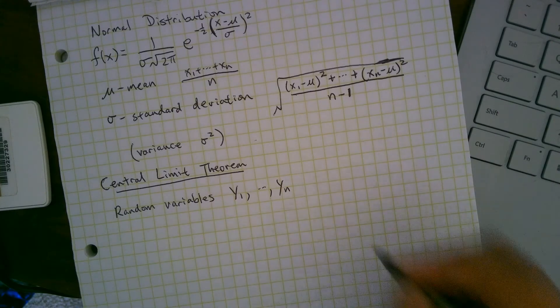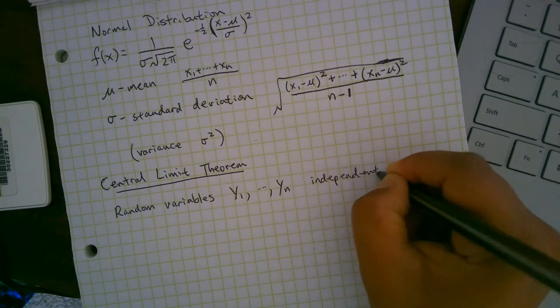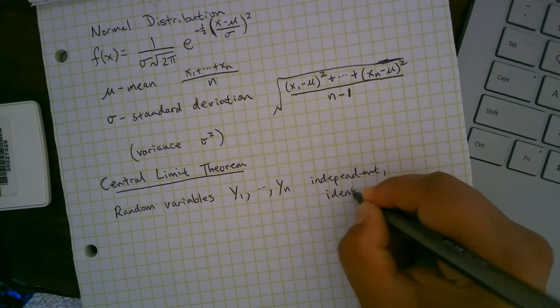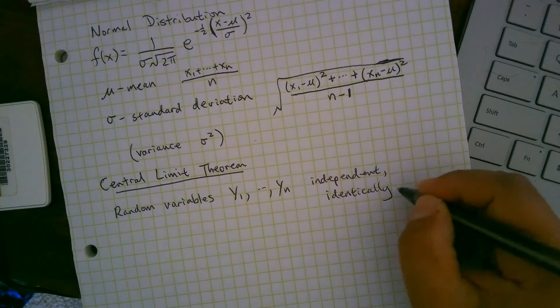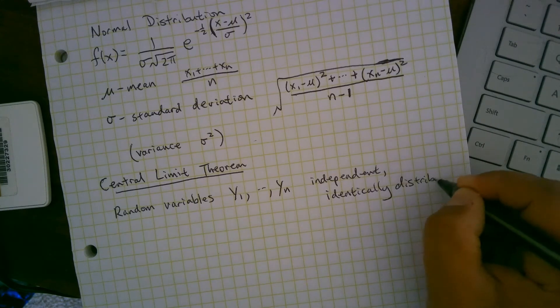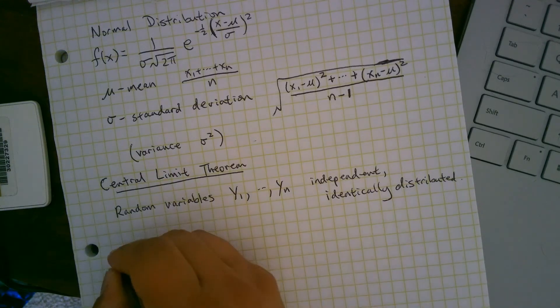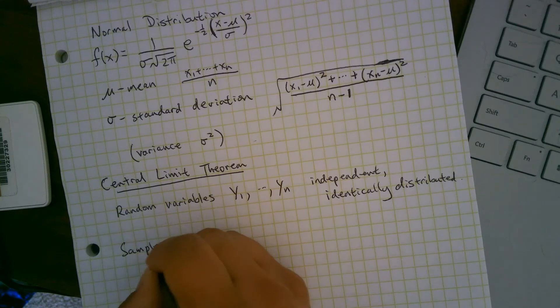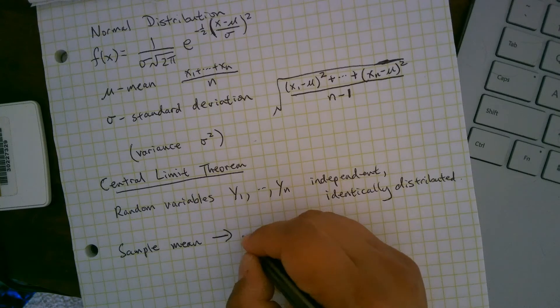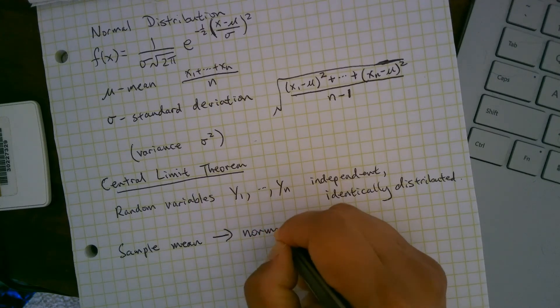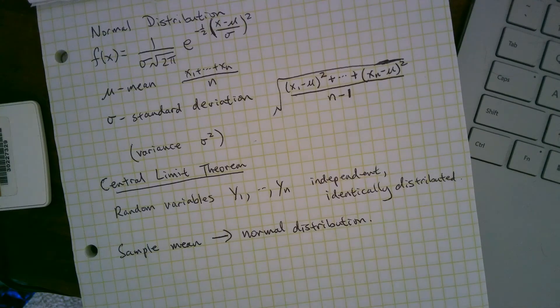These have to be independent and also identically distributed. So all of these y1 through yn have the same distribution graph. If that's true, then the sample mean or average tends towards a normal distribution as we increase the size of the sample.